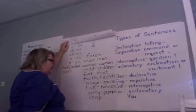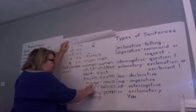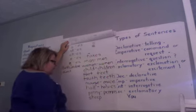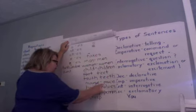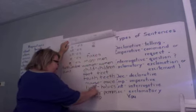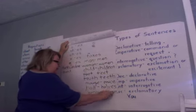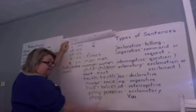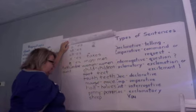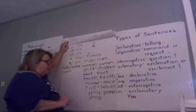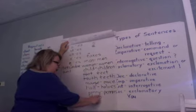We also have words like mouse, which changes to a totally different word — mice. And we have words that end in F: the F becomes a V and you add ES, like half becomes halves and calf becomes calves.